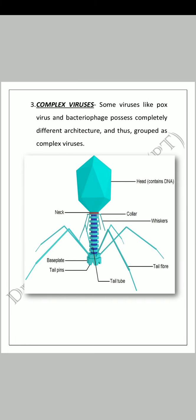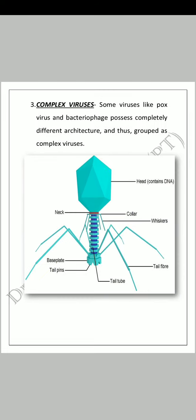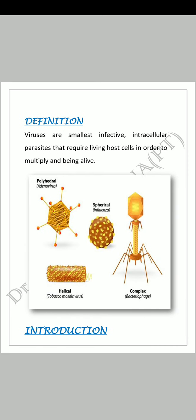Next comes complex viruses. Some viruses like pox virus and bacteriophage possess completely different architecture and are thus grouped as complex viruses. یہ ایسے viruses ہیں جن کا کوئی definite shape نہیں ہوتا۔ جیسا کہ اس diagram میں آپ دیکھ رہے ہو، اس کی الگ ہی shape ہے جس میں neck ہے، collar ہے، whiskers ہیں۔ These are the types of shapes of viruses.